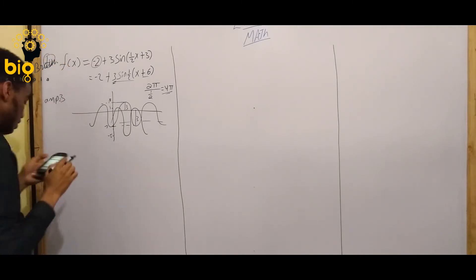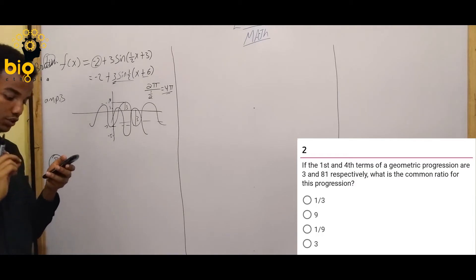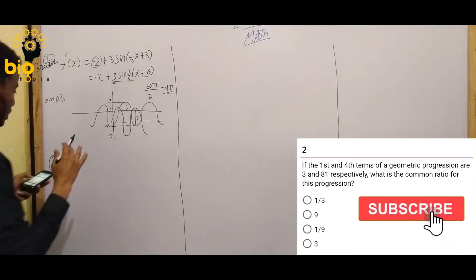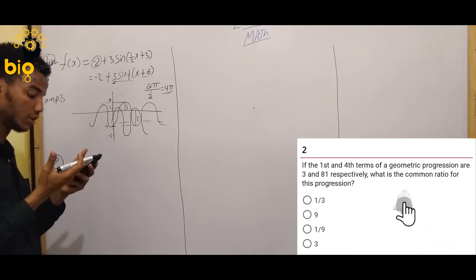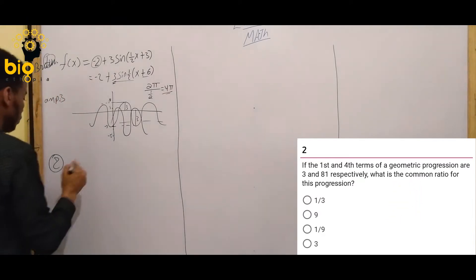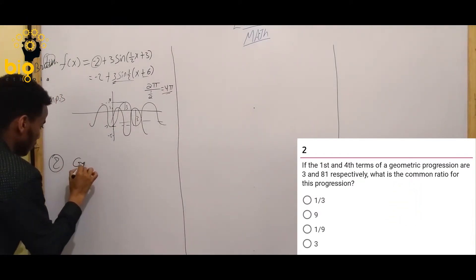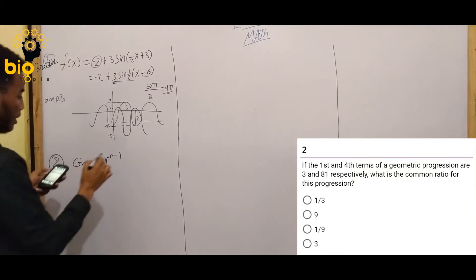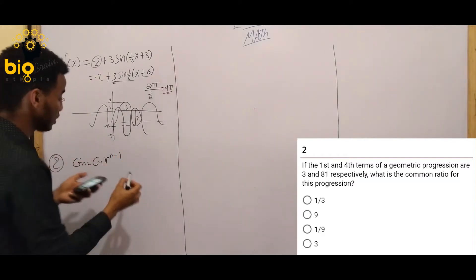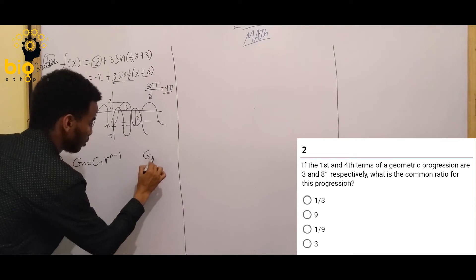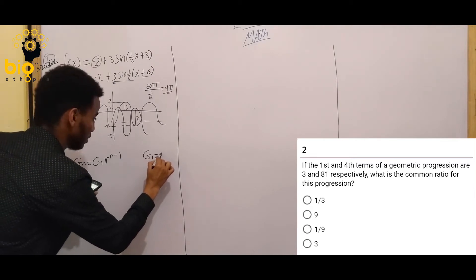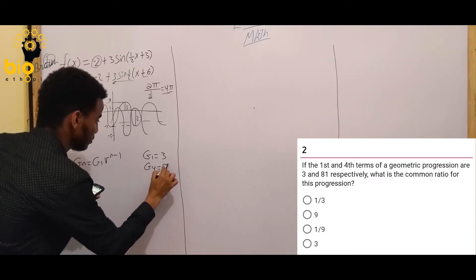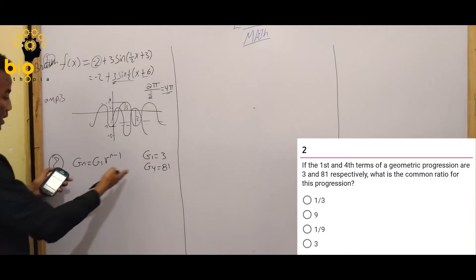The first and fourth terms of a geometric progression are 3 and 81. Find the common ratio for this progression. Let's work through the geometric sequence formula: gₙ = g₁ times r to the power of n minus one.